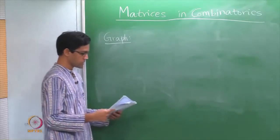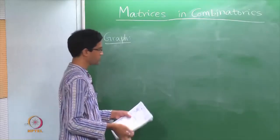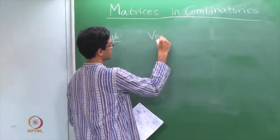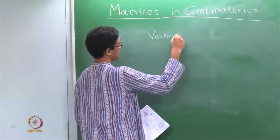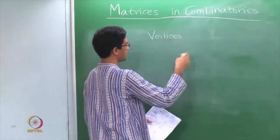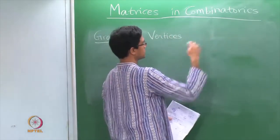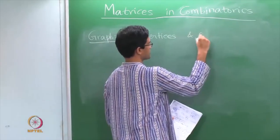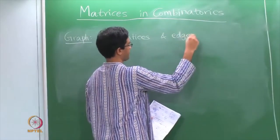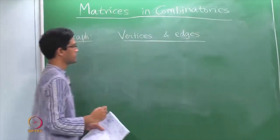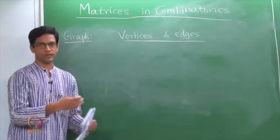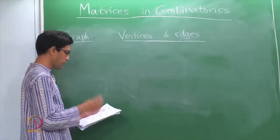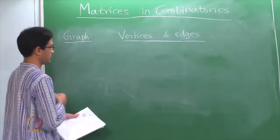This graph refers to the following pieces of information: there is a set of vertices which are connected by lines which we call edges. Vertices and edges together make up the notion of a graph. Let us just do it by example where it is clear.